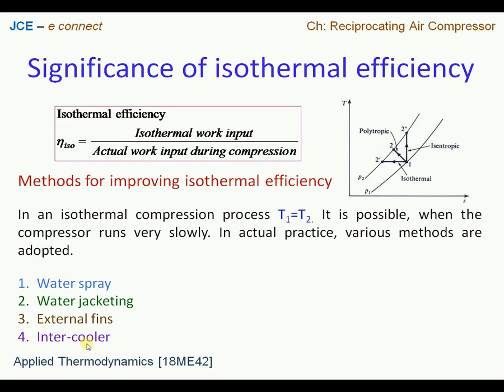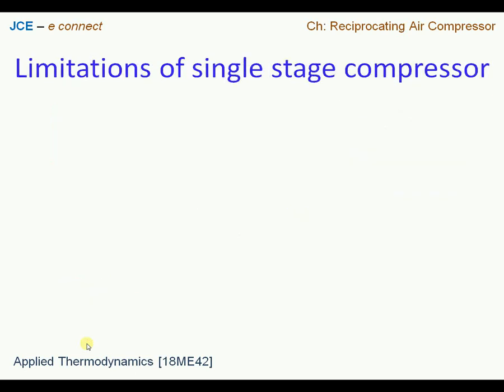The last method is adopting an intercooler to achieve very good isothermal efficiency. An intercooler is essentially a heat exchanger. With two cylinders in place, the working fluid is compressed to some level of pressure in the first cylinder, then passed through the intercooler before entering the second cylinder. The intercooler brings down the temperature without compromising pressure, directly saving work input on the compressor.